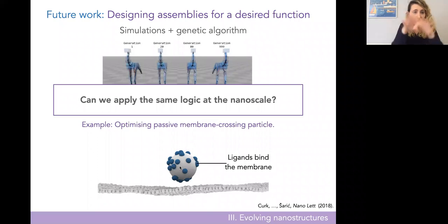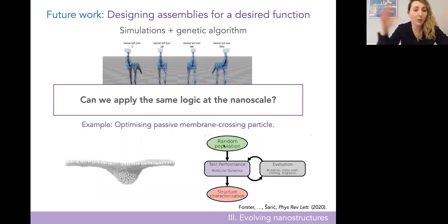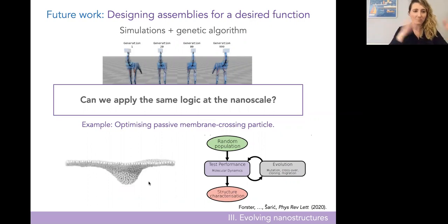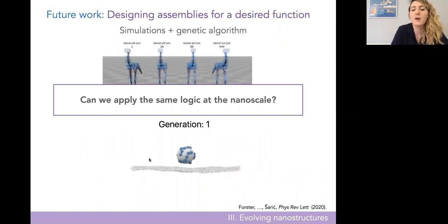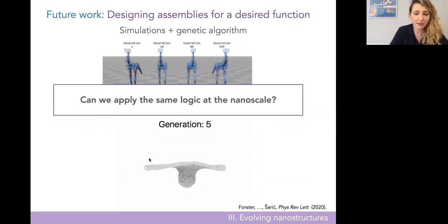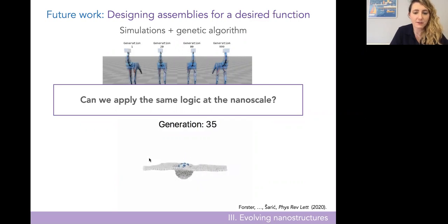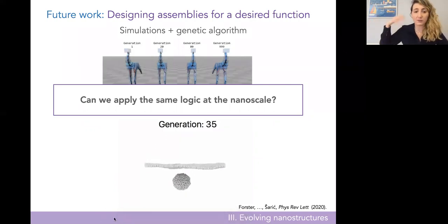You can imagine that the arrangement of ligands will matter — if all on one side, the particle can't be wrapped; if uniformly distributed, it gets wrapped like a candy. We start with a random population of these structures, run molecular dynamics simulations to measure how deep the particle penetrates, take the best-performing ones, mate them, mutate them, and do what evolution would do — many times until we evolve structures that work well, meaning they cross the membrane quickly and reliably. Starting from a random guess, the first particle doesn't really enter the membrane. In generation 5 it starts going deeper; generation 10 it goes in; generation 35 crosses the membrane faster and more reliably, with more of the population entering.